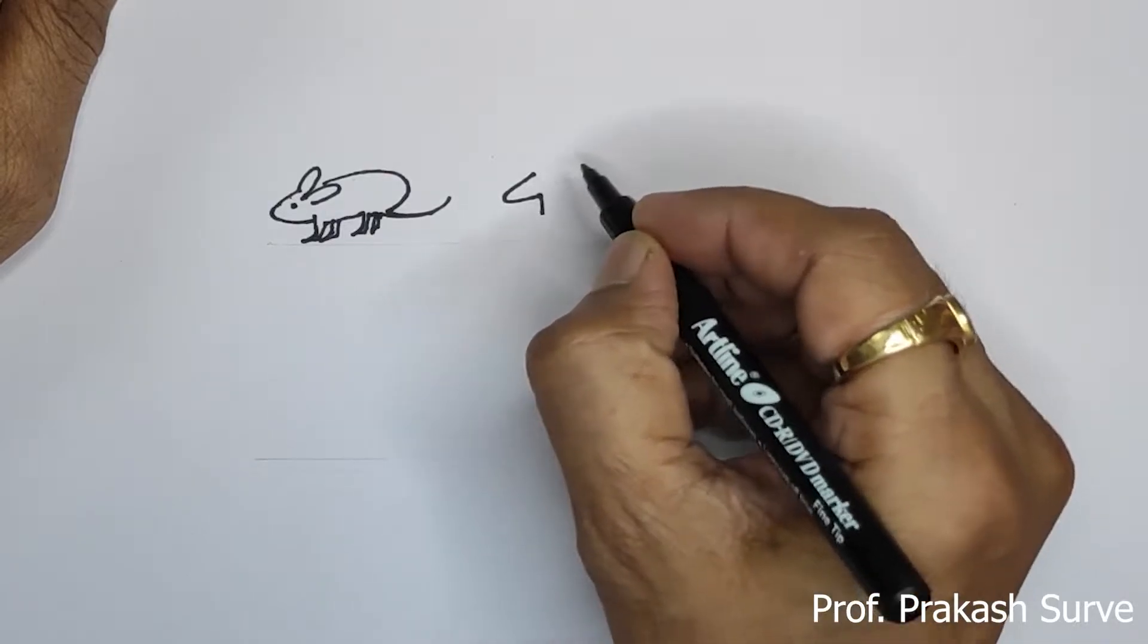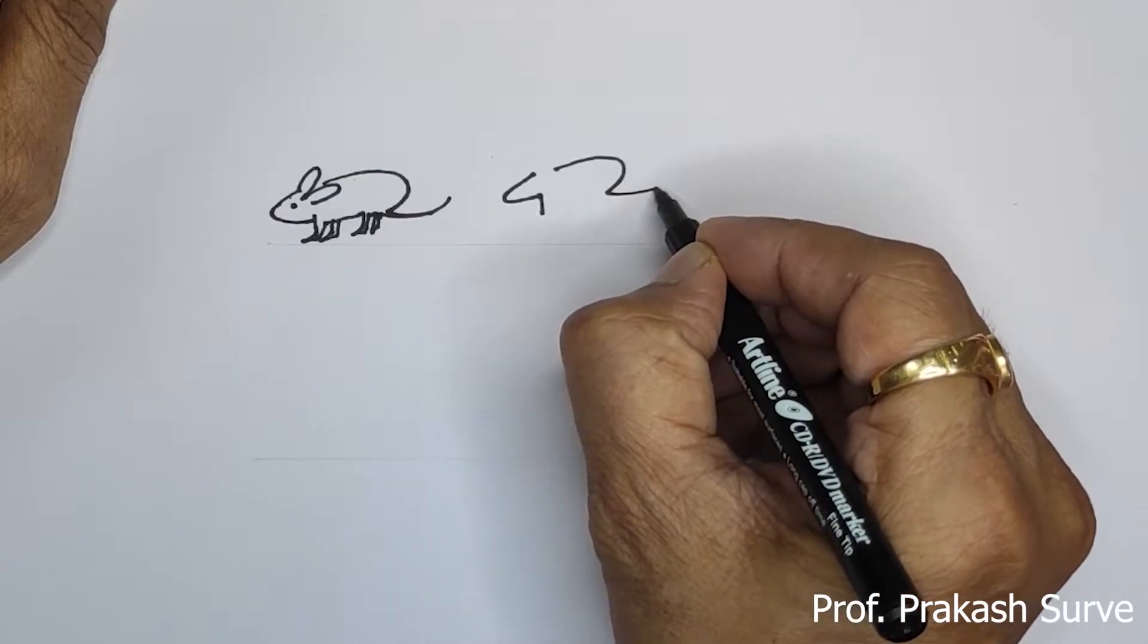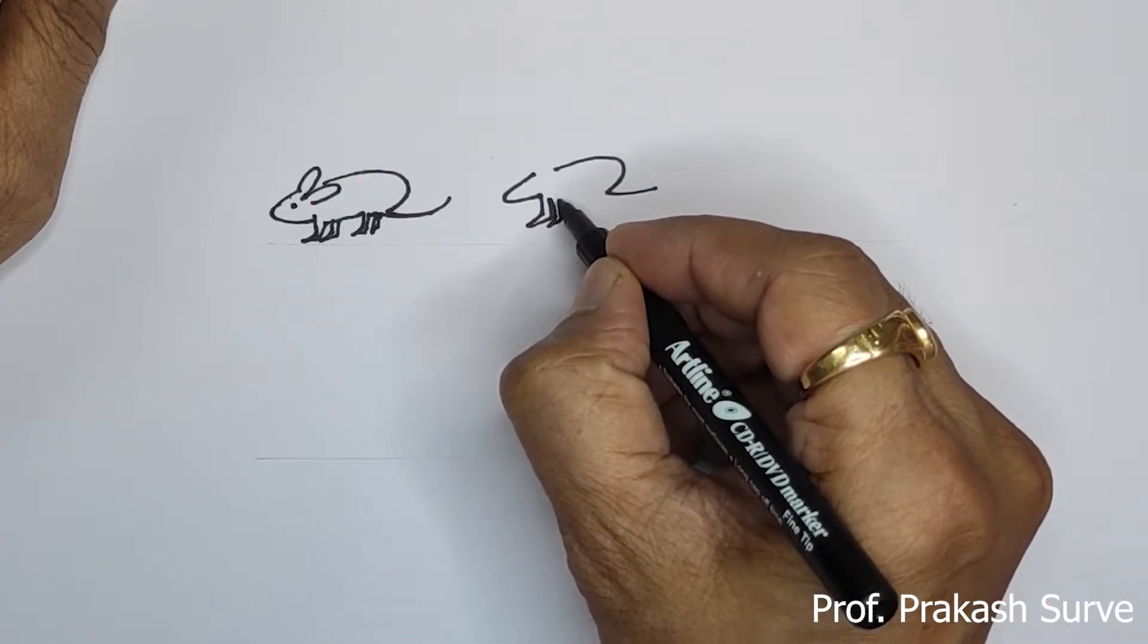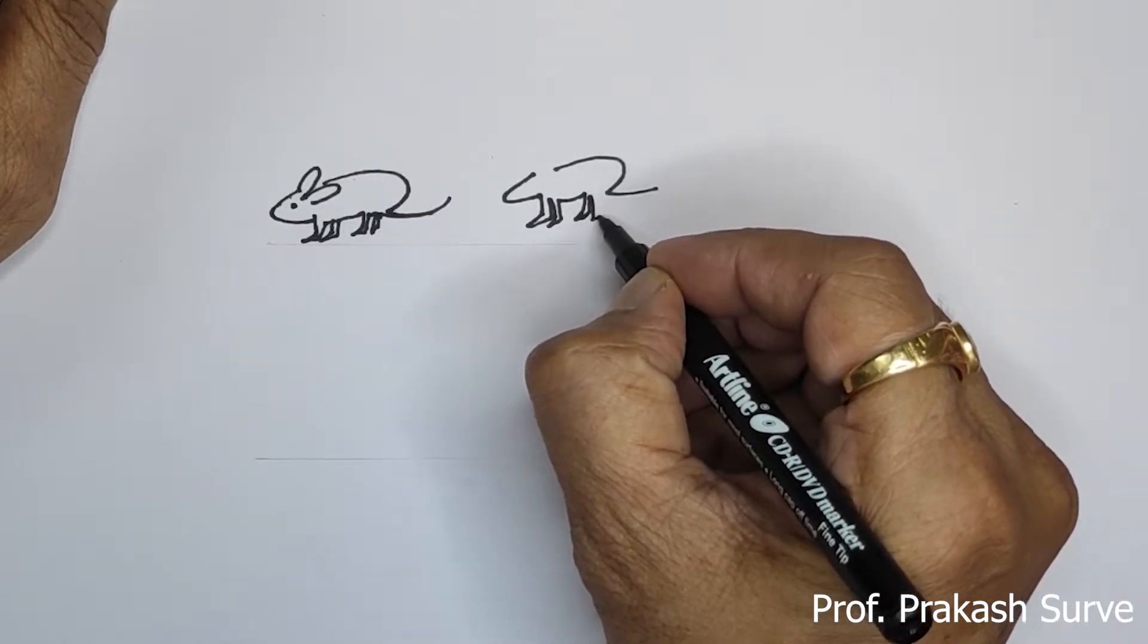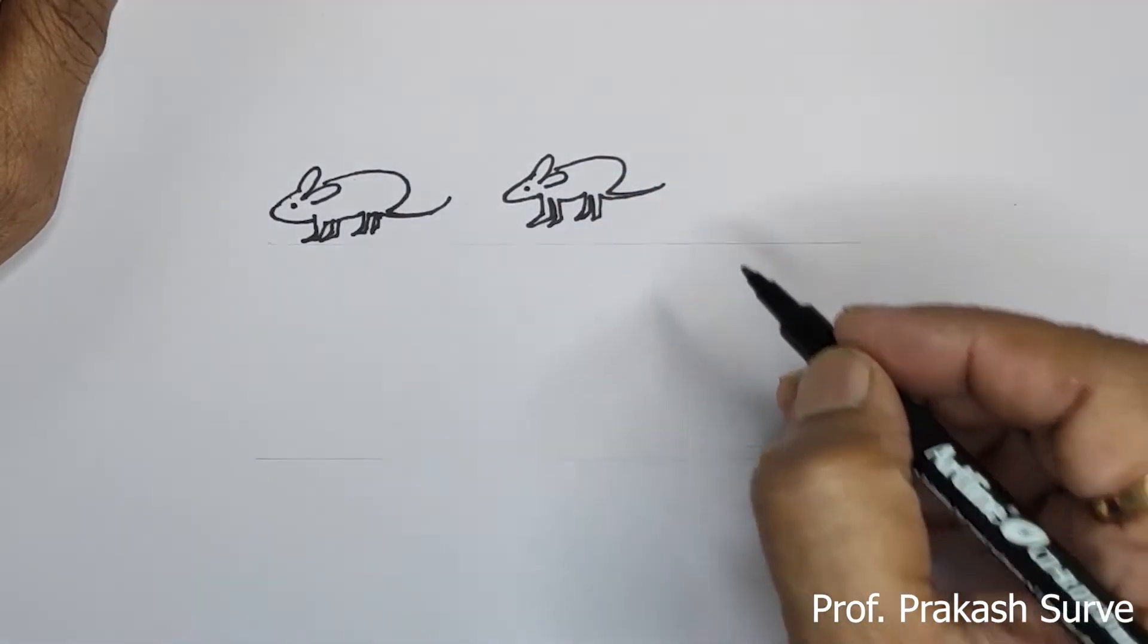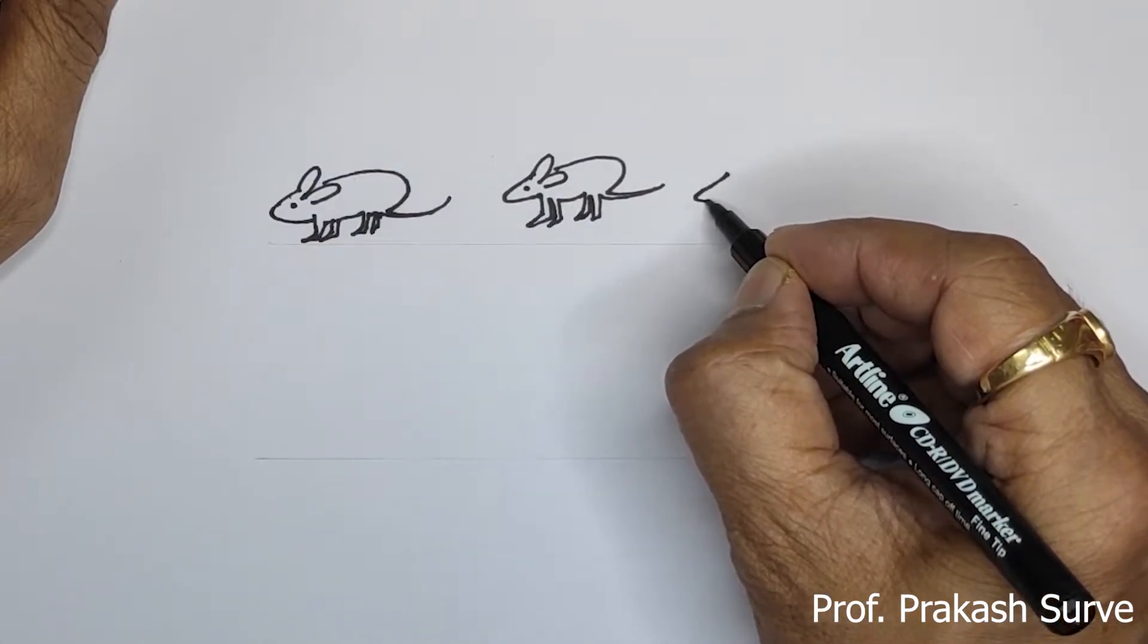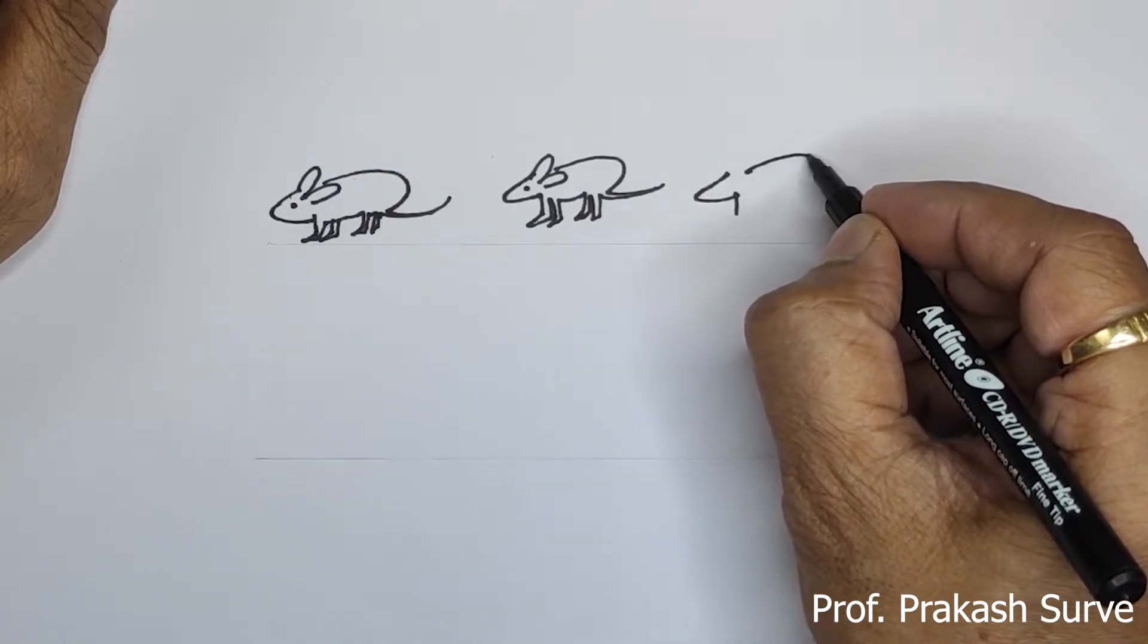So same way all remaining 3 rats also will draw. Same way 2 number. So here we will get the second rat. Here and then eye. Now we will draw third rat. If we do the practice we can do it easily.